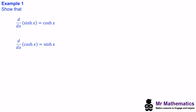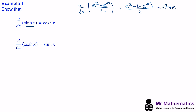In question one we're going to show that the derivative of sinh(x) is cosh(x), and to do this we're going to write sinh(x) in its exponential form. So we work out the derivative with respect to x of (e^x minus e^(-x)) all divided by 2. When we differentiate e^x we get e^x, and when we differentiate e^(-x) we apply the chain rule, giving negative e^(-x), all divided by 2. The subtraction and a negative becomes a positive, so we get (e^x plus e^(-x)) divided by 2, which is exactly the same as cosh(x).